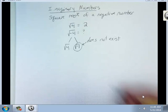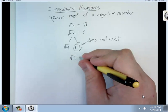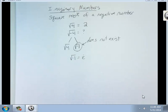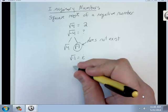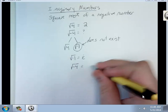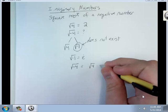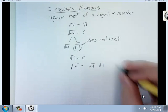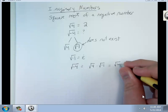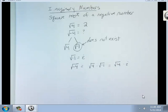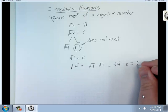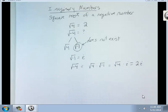So we give it a name. Square root of negative 1 we call i for imaginary. So square root of negative 4 equals square root of 4 times square root of negative 1, which equals square root of 4 times i, which of course equals 2i. All that an imaginary number is, is the square root of a negative number.